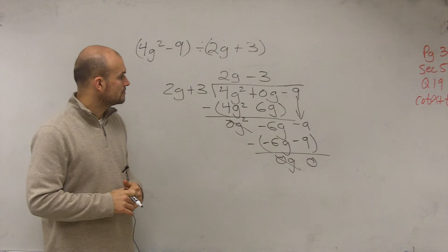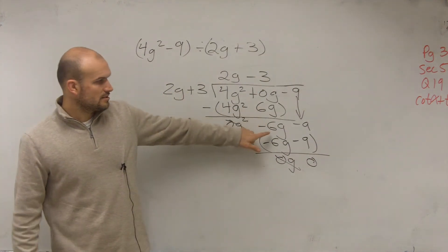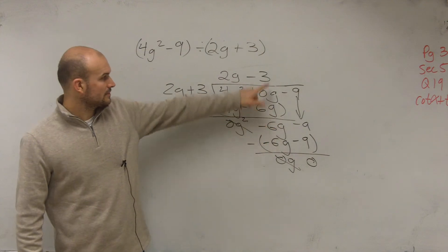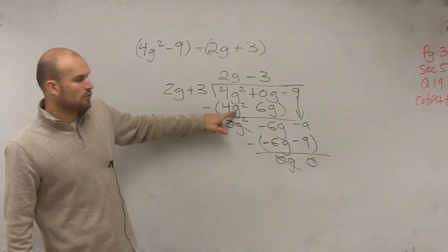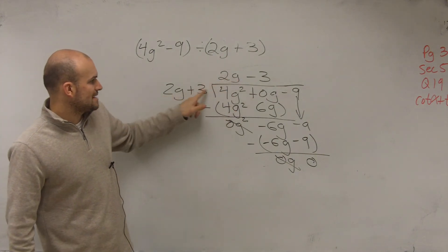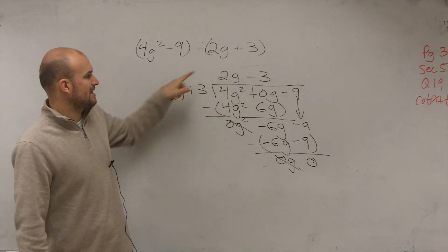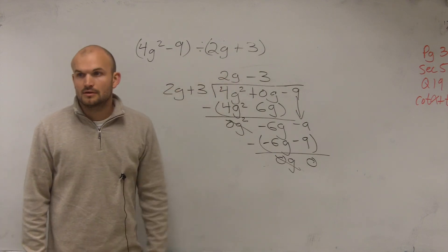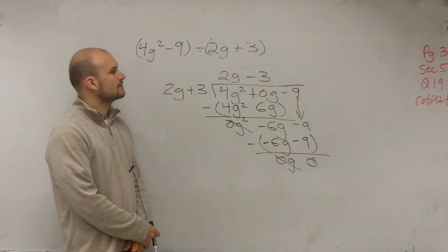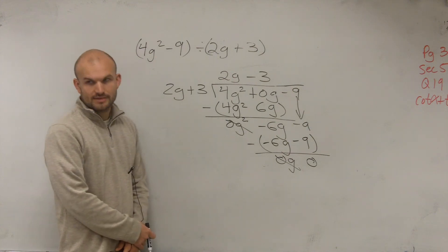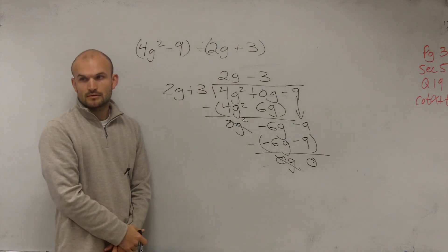Where'd you get this 6? This 6? I did 2g times 2g, which is 4g squared, and then 2g times 3, which is 6g. You've got to make sure whatever your divisor or your quotient is, you multiply that by both of your divisors. So you've got the 2g divided into 4g squared, and then you multiply it by both of your terms in your divisor.